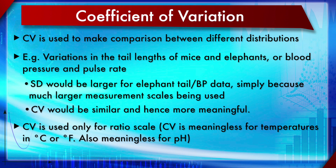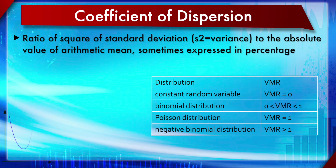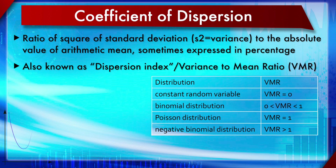Next is CD, the Coefficient of Dispersion. It is the ratio of the square of the standard deviation — that is, the variance — to the absolute value of the arithmetic mean, sometimes expressed as a percentage. So while CV uses SD divided by the absolute mean, CD uses SD squared divided by the absolute mean. Neither CD nor CV can ever be negative. CD is also known as the dispersion index or Variance-to-Mean Ratio (VMR).